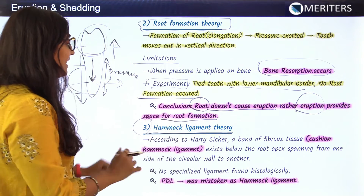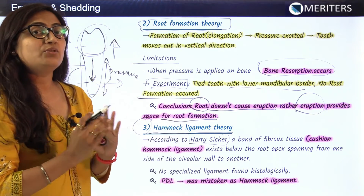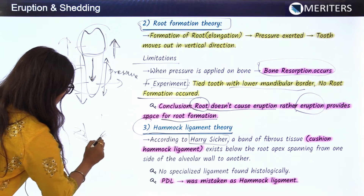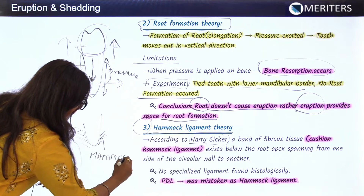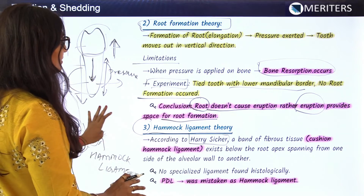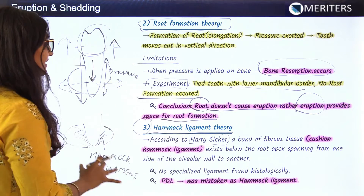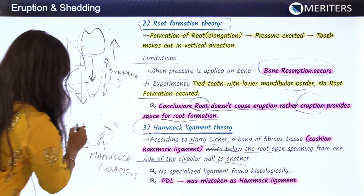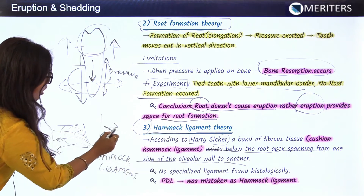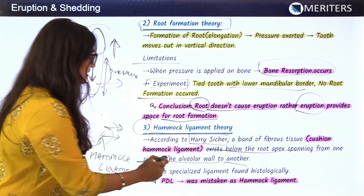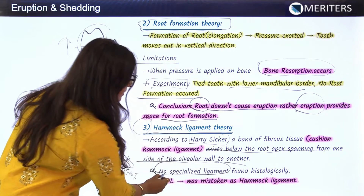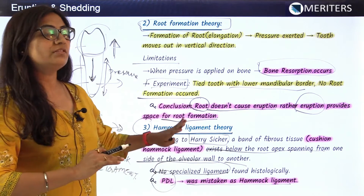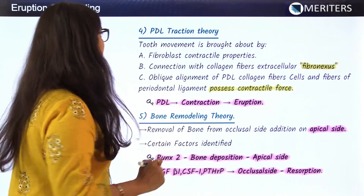The hammock ligament theory, explained by Harry Sicher, states that a band of fibrous tissue known as the hammock ligament exists around the root apex, spanning from one side of the alveolar wall to the other. This ligament was said to cause tooth movement. However, when histological sections were examined, no specialized ligament was found. In some cases, the PDL was mistaken for the hammock ligament. This theory was therefore rejected.